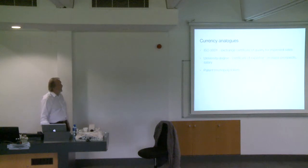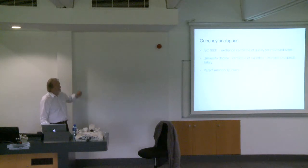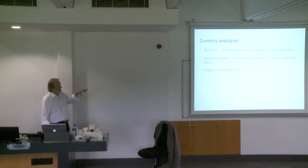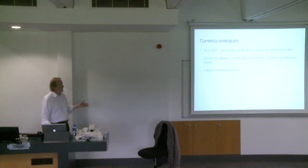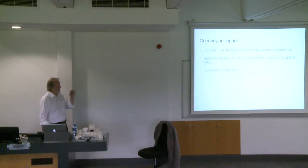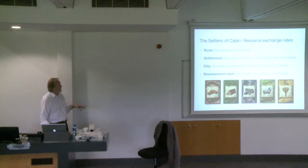ISO 9000 certificates are a certificate of quality that you can exchange for improved sales — that seems to be the main value of them. University degrees are certificates of expertise that increase your prospects and salary. A patent is a monopoly token and has no real value beyond that.